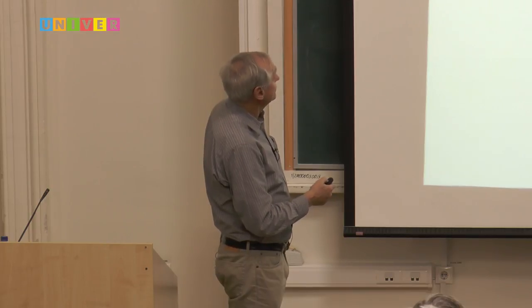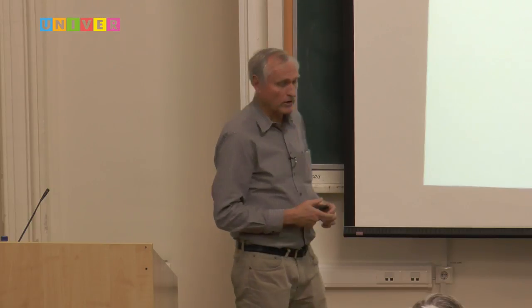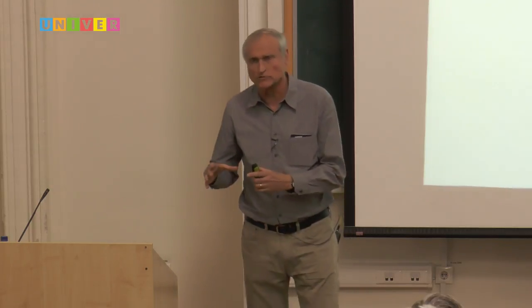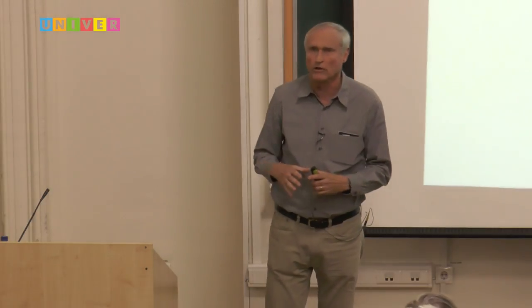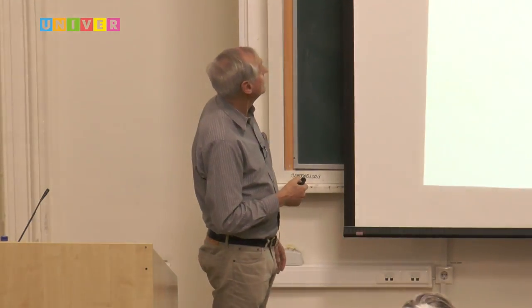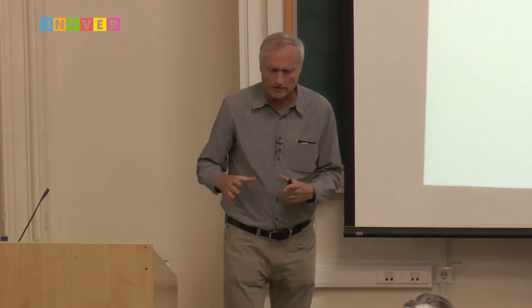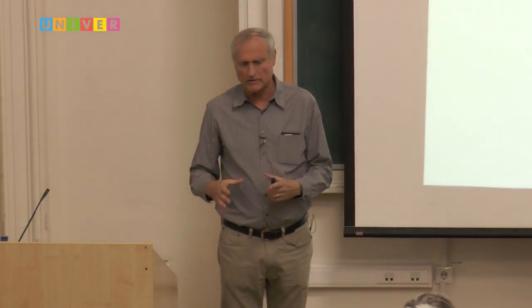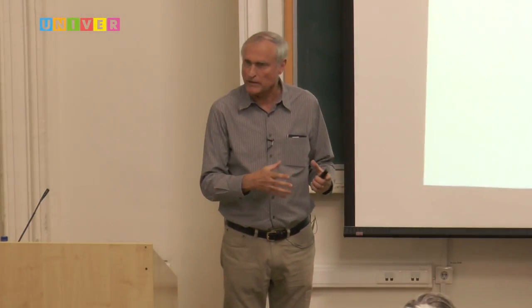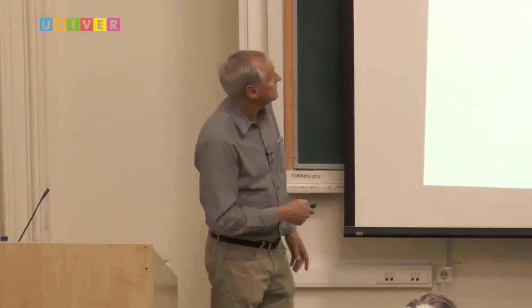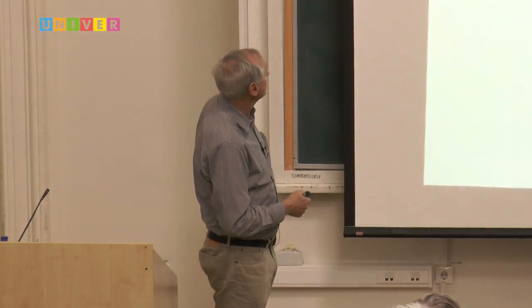The Faber-Krahn inequality is quite closely related to the isoperimetric inequality; in fact, the proof uses the isoperimetric inequality in a natural way. This inequality was originally conjectured by Lord Rayleigh around 1890 and was proven around 1920 by Faber and Krahn.